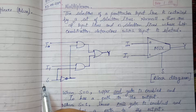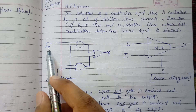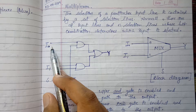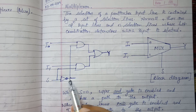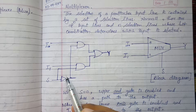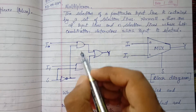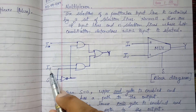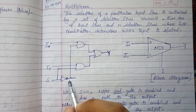Since we have only one selection input, its bit combination can be 0 or 1. That's why the input subscripts are 0 and 1. I0 will be the output if the selection line is 0, and I1 will be the output when the bit combination of the selection line is 1.